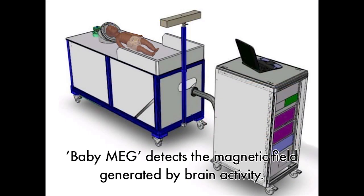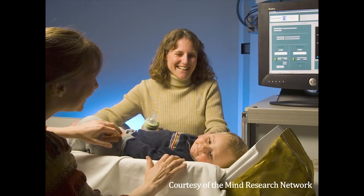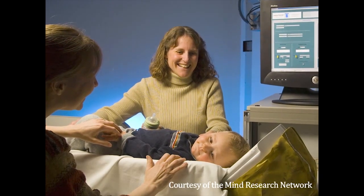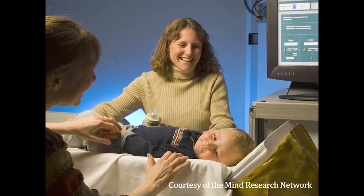Magnetoencephalography, instead of looking at consumption of a fuel neurons use like in NIRS, we use it to measure the actual fluctuations in magnetic fields caused by the electrical neural activity. Currently only adult head-sized systems exist. With funding from the National Science Foundation, we are building the first MEG optimized for kids up to three years of age, which we call the Baby MEG.